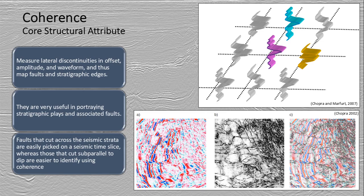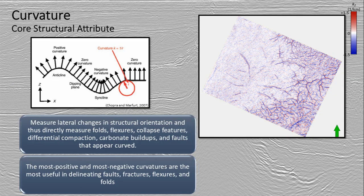After calculating dip, coherence is the next structural attribute that you will want to measure, as it measures the lateral discontinuities and helps in mapping faults and stratigraphic edges. It's extremely useful in portraying stratigraphic plays and their associated faults.